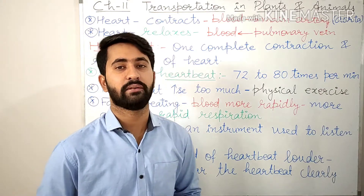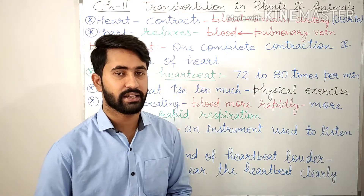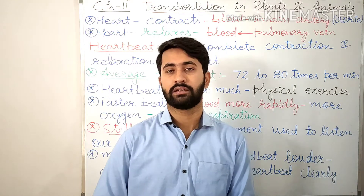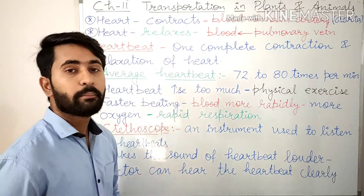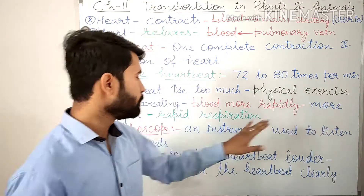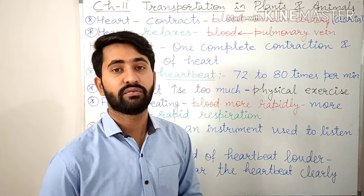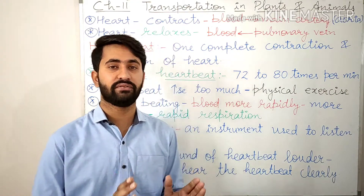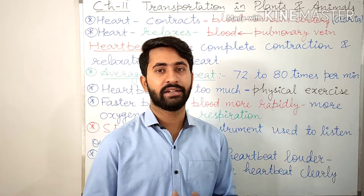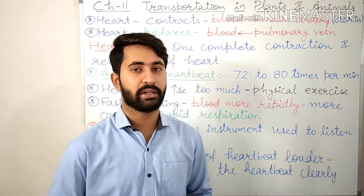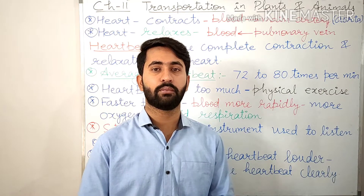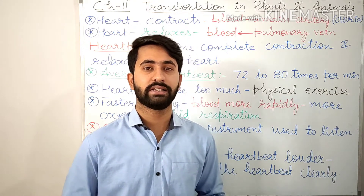If we count our heartbeat after running or doing a physical exercise, we may find that our heartbeat is more than 100 times per minute. The faster beating of the heart pumps blood more rapidly into the body organs, which supplies more oxygen to the body cells for rapid respiration so that more energy can be produced. In our body, energy is produced by the process of respiration and for that we need oxygen. That's why our heart beats faster so that more blood will reach the body cells, carrying more oxygen with it.